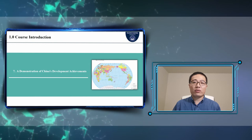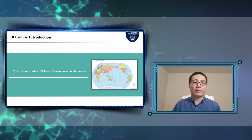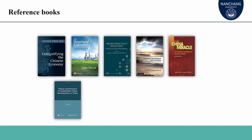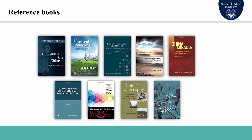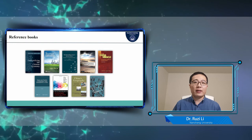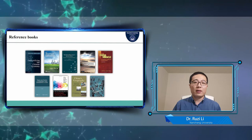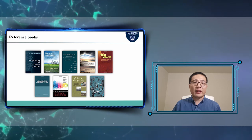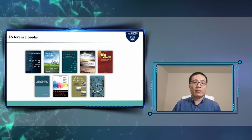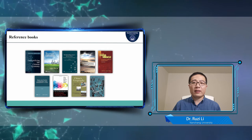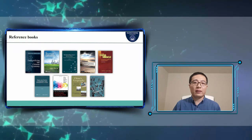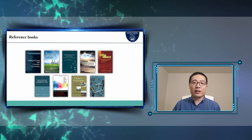That covers the outline of the introduction of New Structural Regional Economics. To study this course well, you will need some reference materials, mainly divided into two categories. Books related to New Structural Economics include Demystifying the Chinese Economy, New Structural Economics: A Framework for Rethinking Development and Policy, The Industry Policy Revolution, and The China Miracle, all written by Professor Justin Yifu Lin. These works may help you understand New Structural Economics.